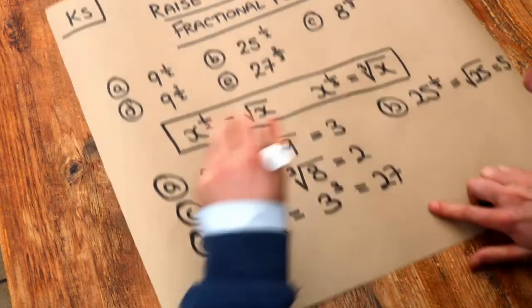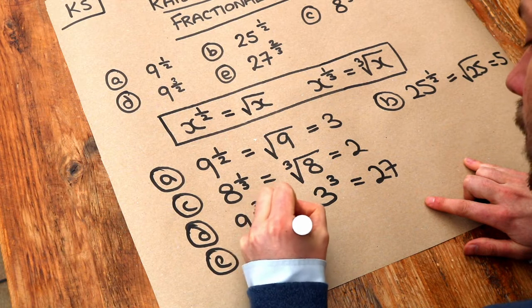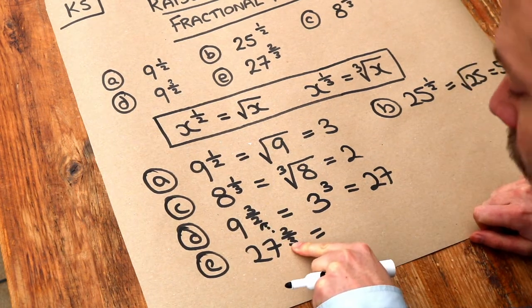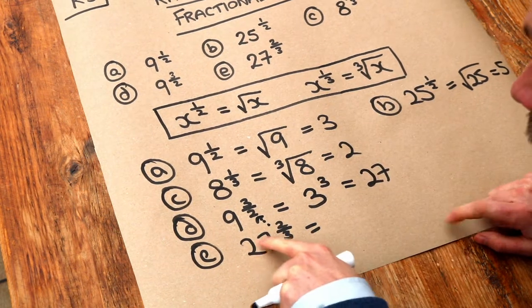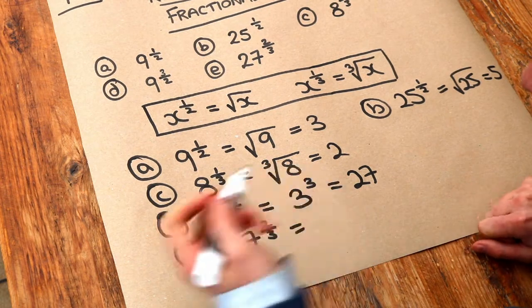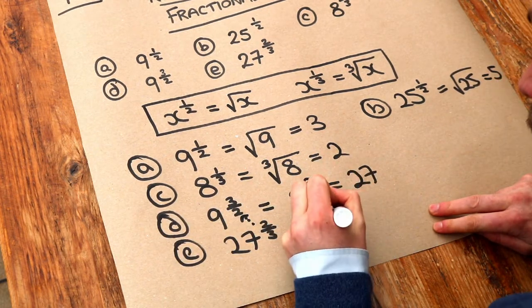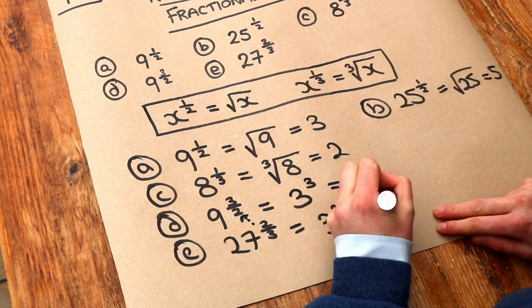Let's try that again with the last one. We've got 27 to the 2 thirds. So as per before, we look at the denominator of the fractional power first. It's a 3, so therefore we cube root this number here, the 27. The cube root of 27 is 3. And we've still got that 2 in the numerator, so we put that there. And then 3 squared is just 9.